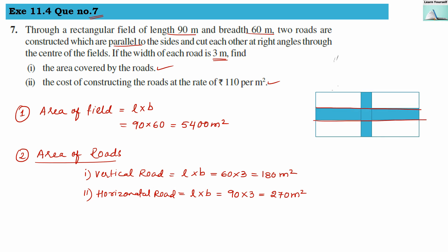Now, concentrate here: these two roads are crossing each other at right angles at the center of the field. So this center square has been calculated twice — once in each road's area. We need to calculate it only once, so we subtract it once.